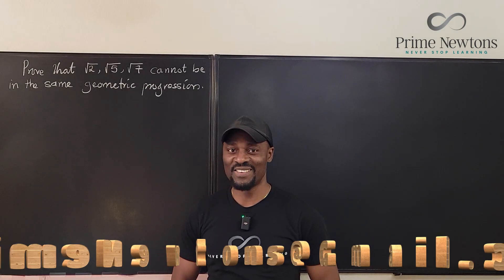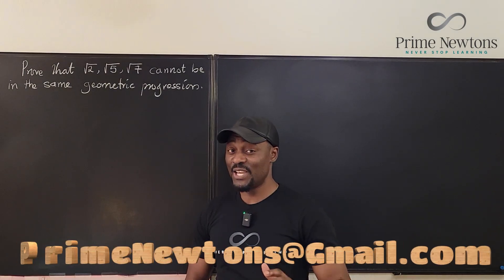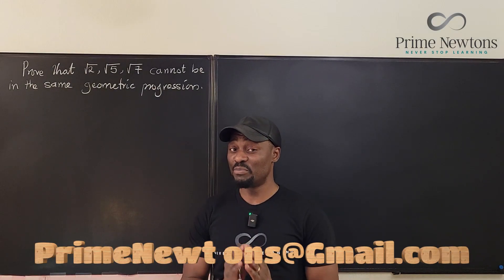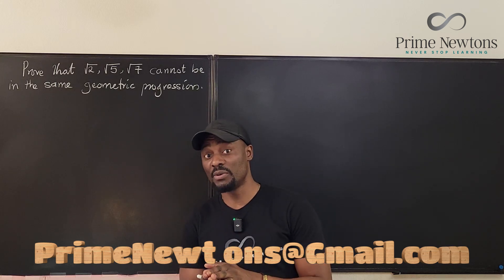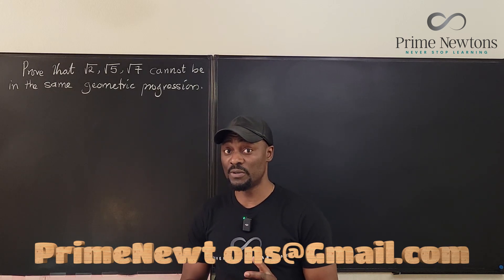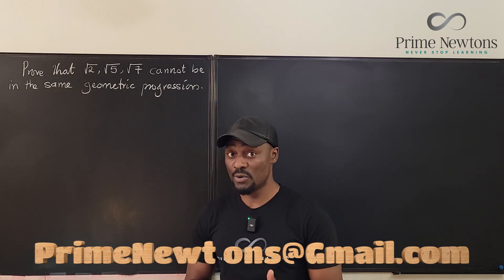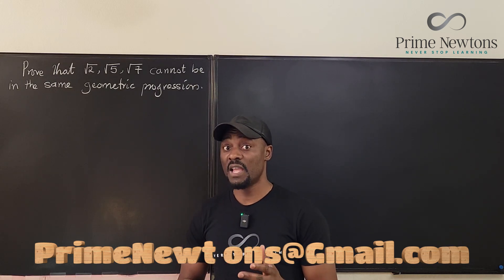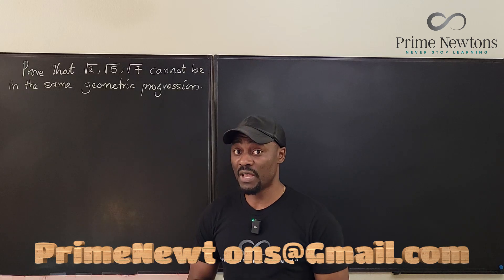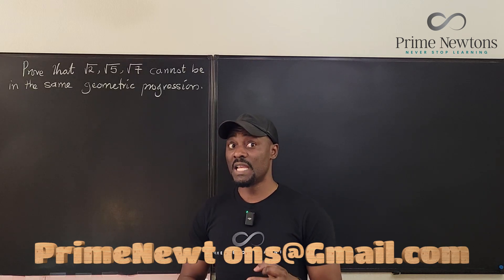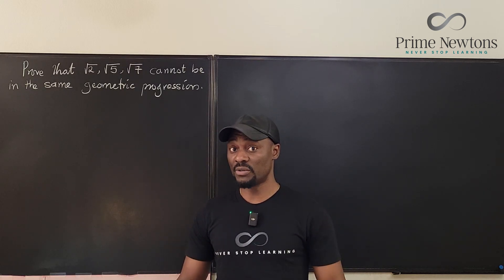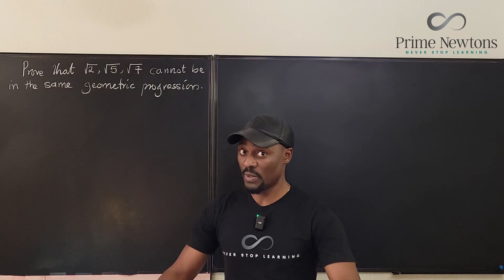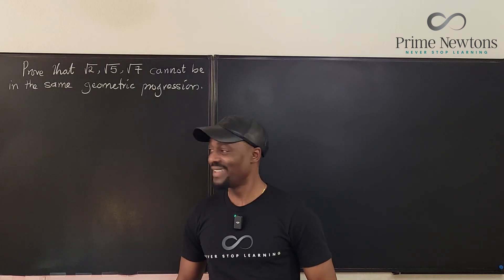Welcome to another video. In this video I am going to prove that it is impossible for you to have the square root of 2, the square root of 5, and the square root of 7 in the same geometric progression — what you call the geometric sequence.